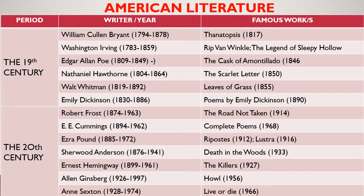Ezra Weston Loomis Pound was a leader of the Imagists, who emphasized the use of direct and sparse language and precise images in writing poetry. He was an expatriate American poet and critic, a major figure in early modernist poetry and a fascist collaborator in Italy during World War II. He was born October 3, 1885, in Idaho, and died November 1, 1972, in Venice, Italy.